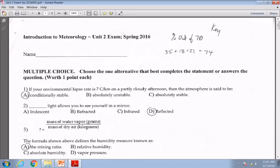Of course, the ELR for number seven is between the five or six and ten. So actually, that's conditionally stable. The best answer there is A for number one. Question number two, I was after reflected. Reflected light allows you to see yourself in the mirror. Question number three was one of the different ways that we describe humidity, and that's actually the mixing ratio for number three.